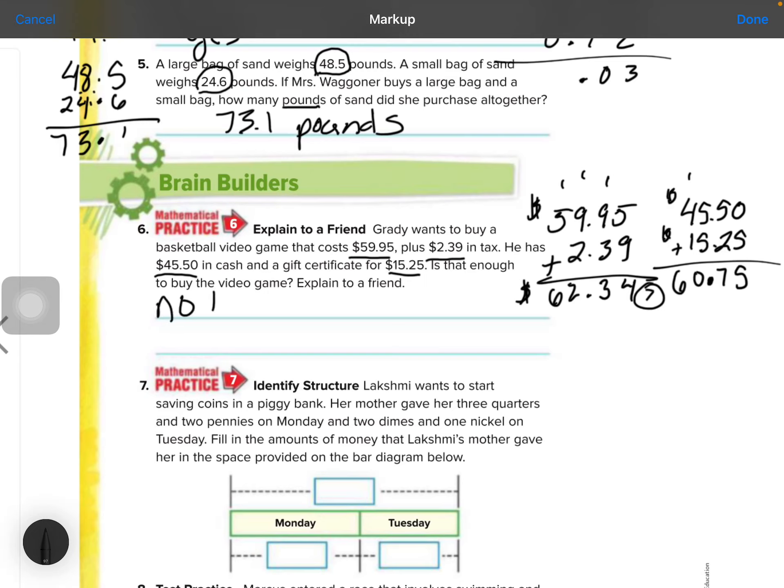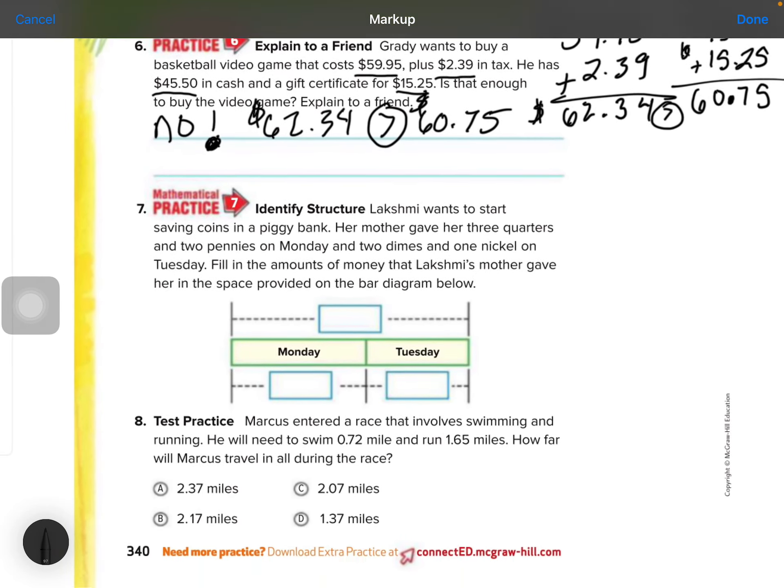Ooh, does he have enough to buy the video game? No! He does not have enough to buy the video game. So the reasoning is that the video game price, the $62.34, is way more. Well, not really way more, but more than what he has in his pocket. Poor guy.